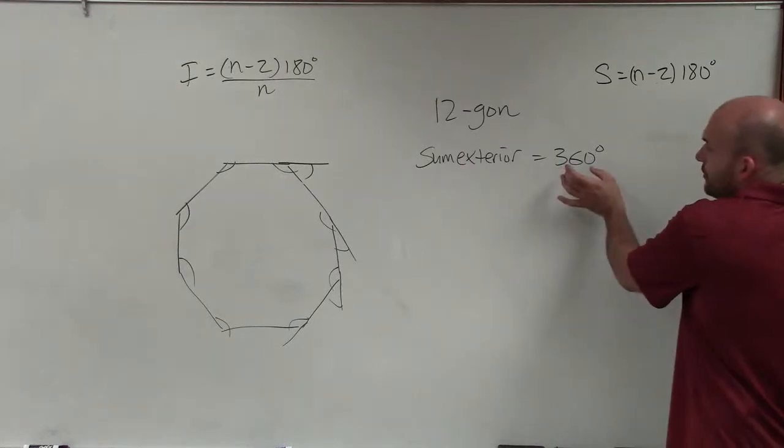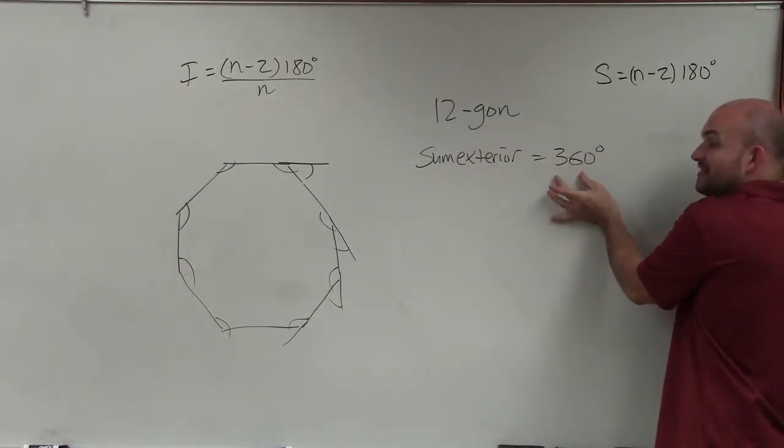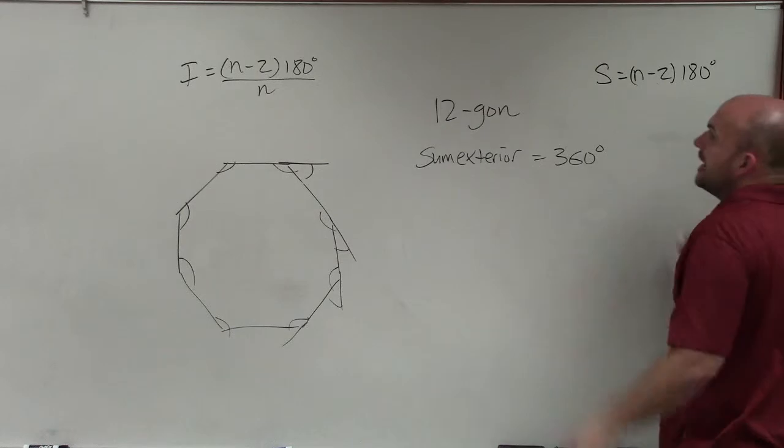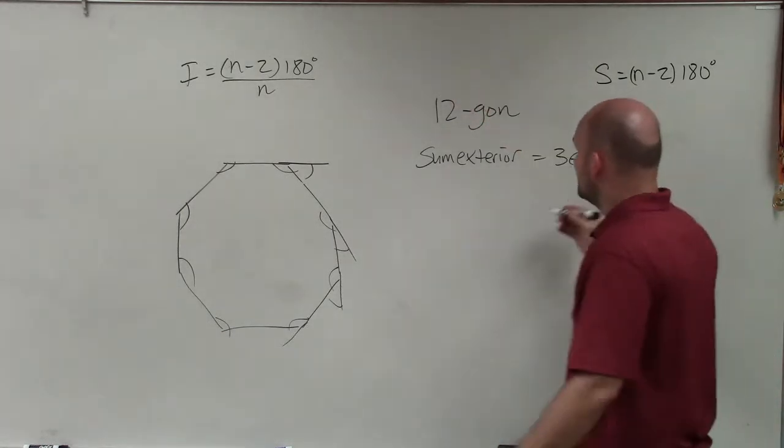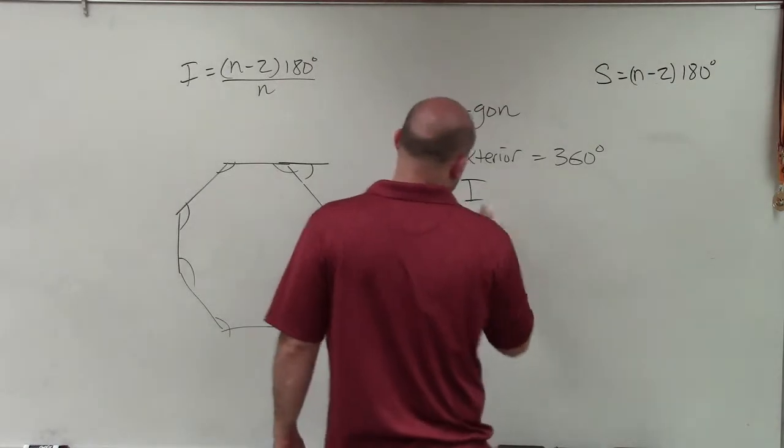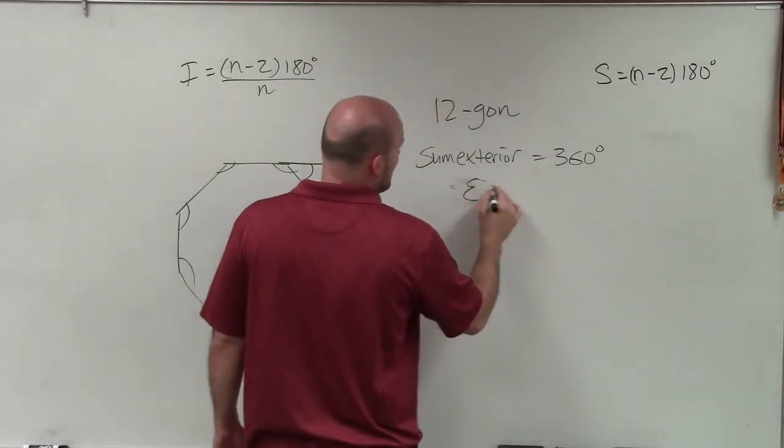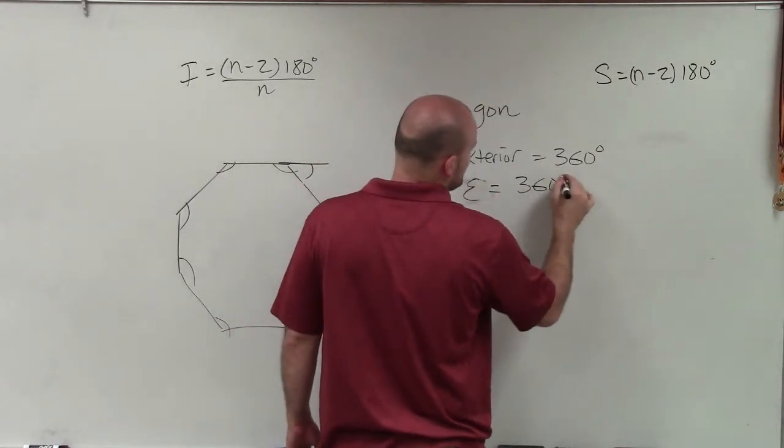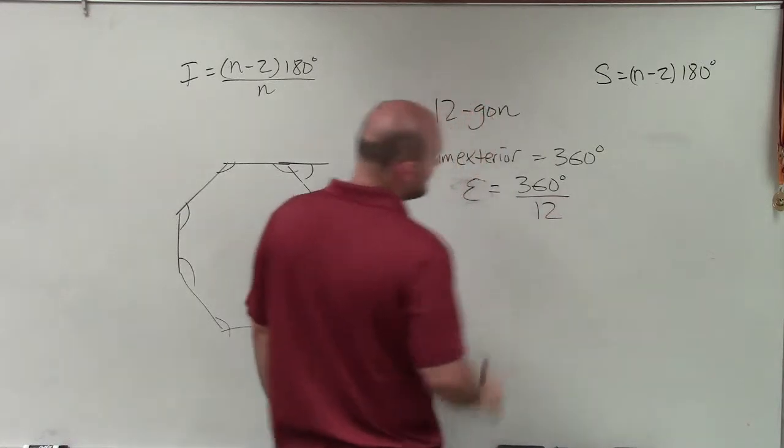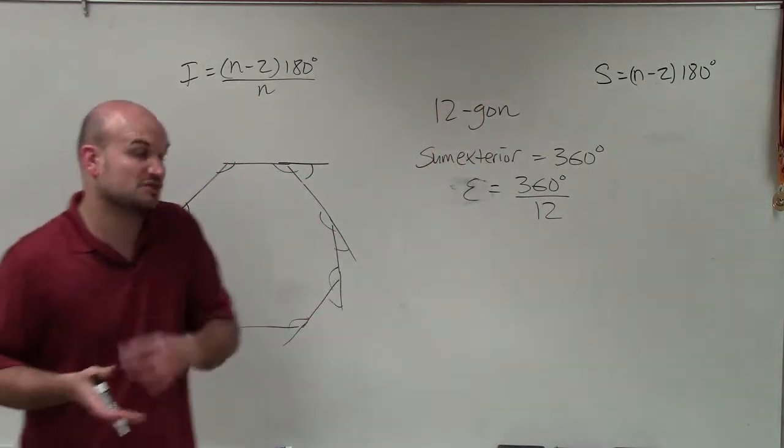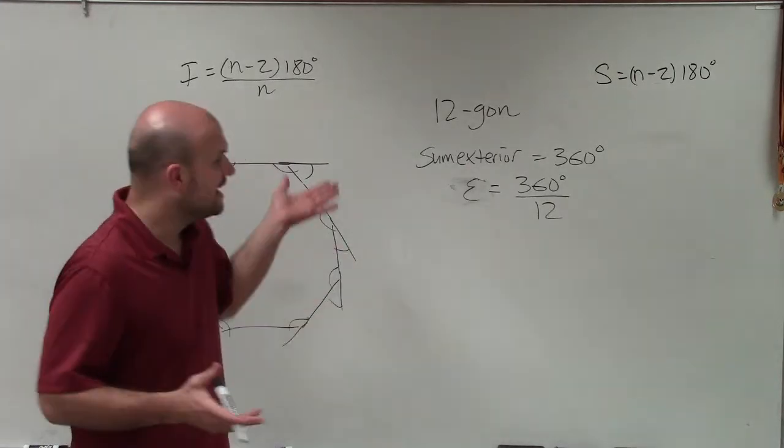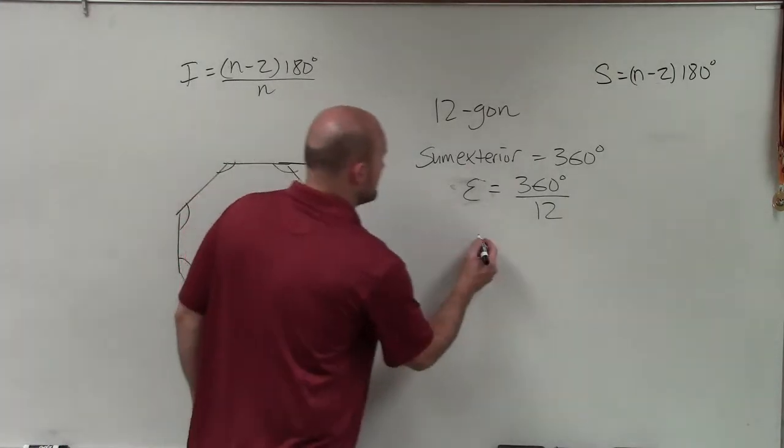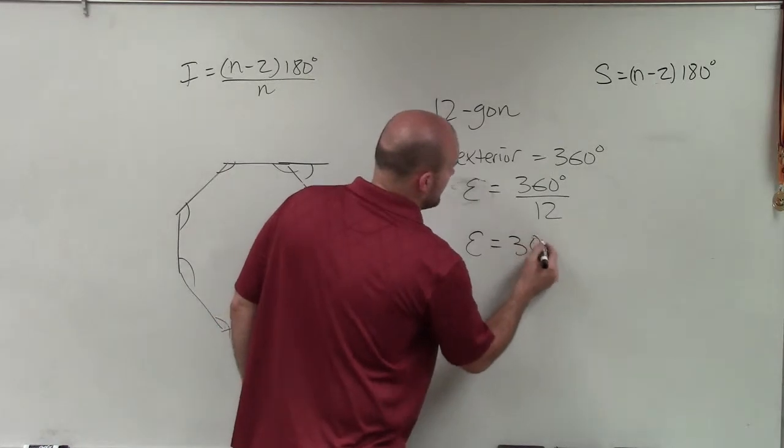So if I know I have a 12-gon that has the sum of exterior angles, which is 360, I'm going to have 12 exterior angles because I have 12 sides. So to find the individual angle of one exterior angle, all I simply need to do is take 360 divided by 12. So take the sum of exterior angles, which is going to be the same for all regular polygons, and divide it by the number of sides. Therefore, E equals 30 degrees.